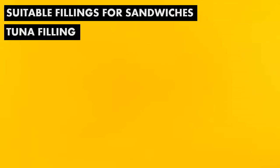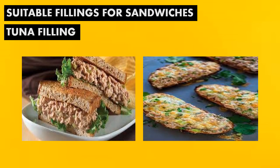And lastly, we have the tuna filling. Combine one cup of canned tuna flakes, two tablespoons of pickle relish, and one-half cup of drained crushed pineapple, and two tablespoons of mayonnaise. Now let's proceed with the different suitable spreads and sauces for sandwiches.